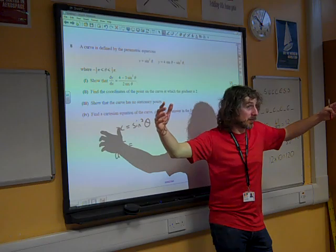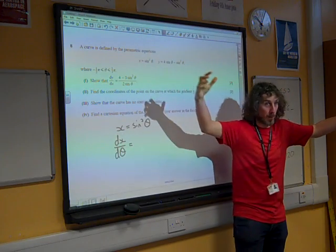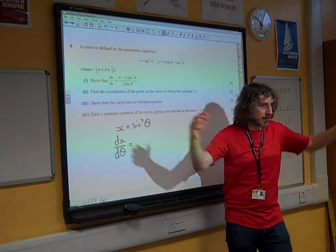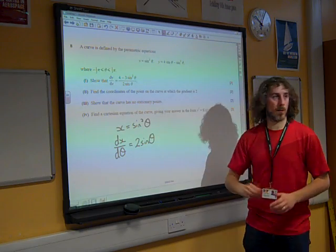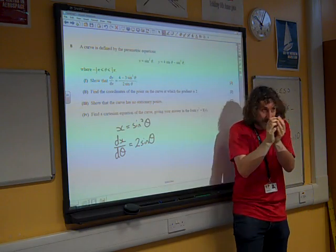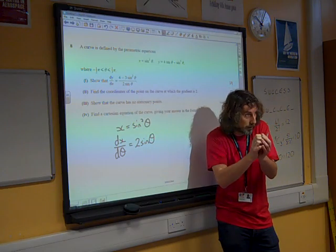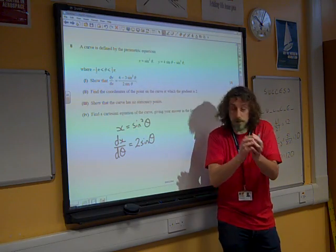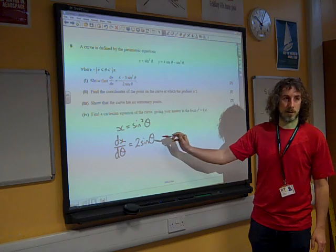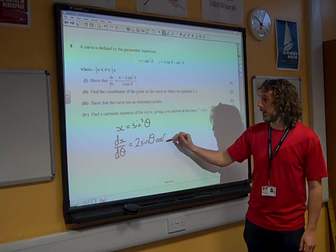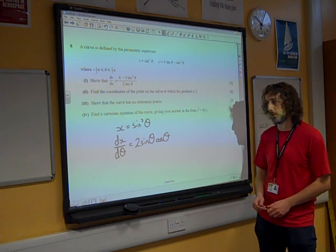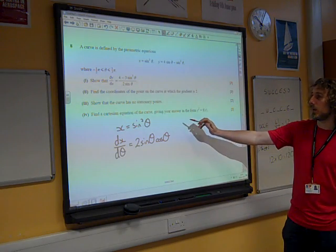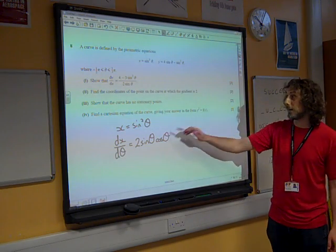So the big thing is something squared, it's sine theta all squared. And if you differentiate something squared, you get twice the something to the power 1. We're going to multiply by the derivative of the inside function, which is sine theta. If we differentiate sine theta, we get cos theta. So that's dx by d theta.